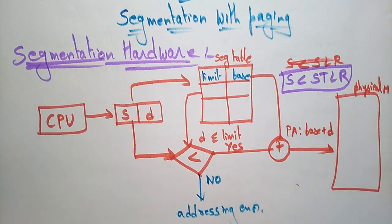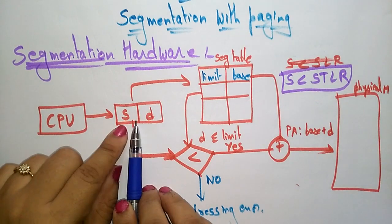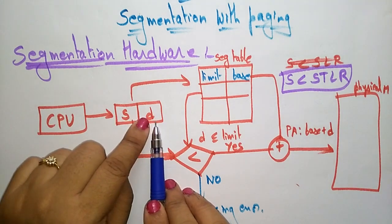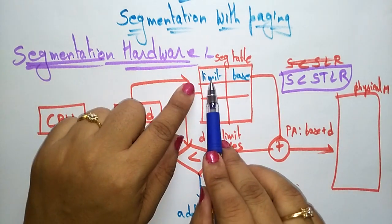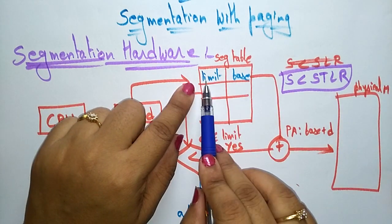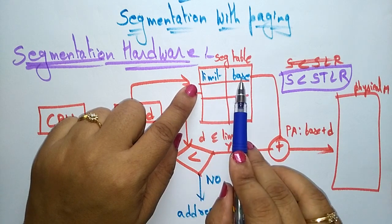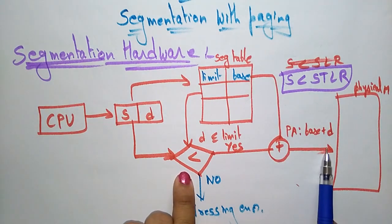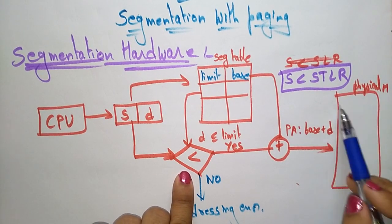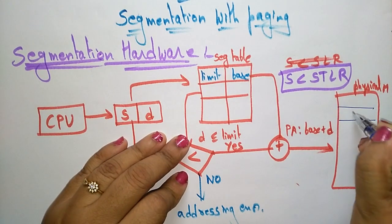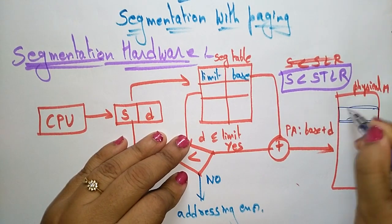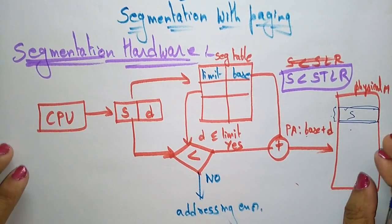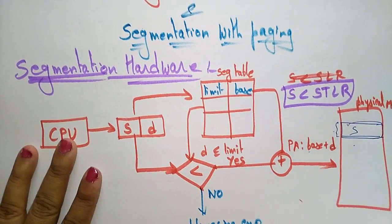This is how the segmentation hardware is implemented. The CPU first sends the segments, where each segment holds the segment name and the offset. This segment name and offset are stored in the form of limit and base. The limit consists of the length of the segment and the base is the starting physical address. That starting physical address plus the offset are added, and the segment is stored at that location — base plus D.